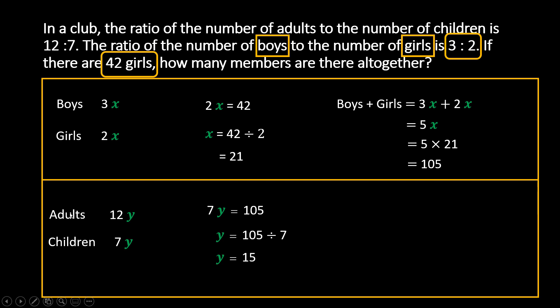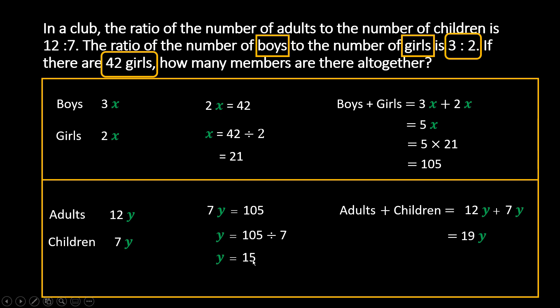Now we need to find adults plus children. The question says how many members are there altogether, so we need to add up these two. Adults plus children is equal to 12y plus 7y, which is equal to 19y. And we know y is equal to 15. So this is equal to 19 times 15, which is 285. So that is the total number of members.